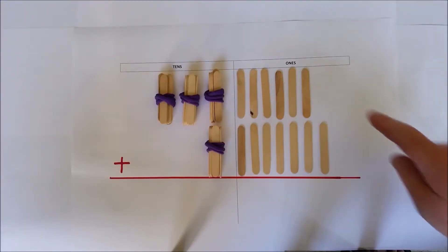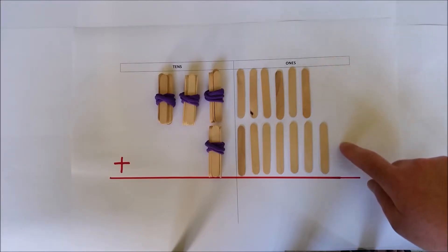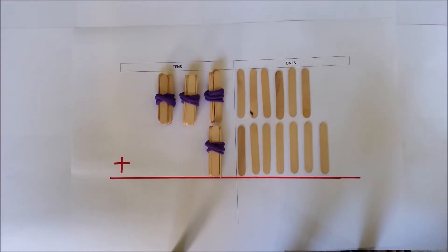Add the ones. Six ones and seven ones is 13 ones. Rename 13 ones as three ones and one ten.